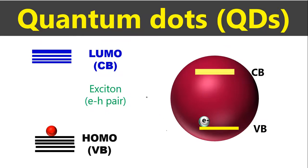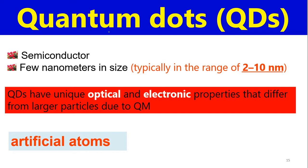Let's talk about quantum dots. Quantum dots are the future of nanotechnology — why we need quantum dots and what are the extraordinary features of quantum dots. Quantum dots are basically semiconductors. We know there are conductors, there are insulators, and there is a semiconductor between the conductor and insulator — that is semiconductor.